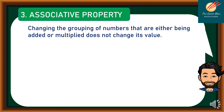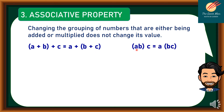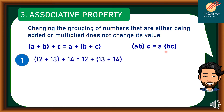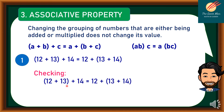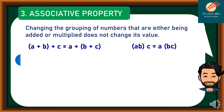Let's move on to the third property, which is the associative property. Changing the grouping of numbers that are either being added or multiplied does not change the value. In symbols: (a plus b) plus c equals a plus (b plus c), and similarly (a times b) times c equals a times (b times c). For example, 12 plus 13 plus 14 is the same as 12 plus (13 plus 14), giving us 25 plus 14 equals 12 plus 27, and 39 equals 39.